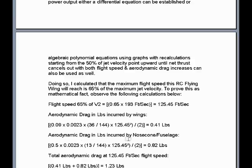Next, we calculate the aerodynamic drag in pounds incurred by the nose cone/fuselage. The nose cone has an aerodynamic drag coefficient of 0.5, multiplied times an air density of 0.0023 slugs per cubic foot. We take the projected frontal area of 13 square inches and divide by 144 to convert to square feet. Then we multiply by the flight speed of 125.45 feet per second quantity squared. This entire calculation divided by 2 equals 0.82 pounds of aerodynamic drag incurred by the nose cone/fuselage when at a flight speed of 125.45 feet per second.